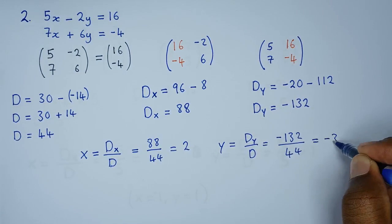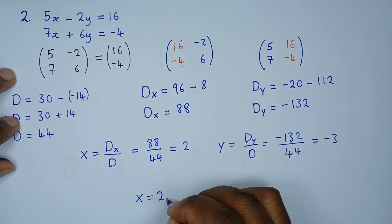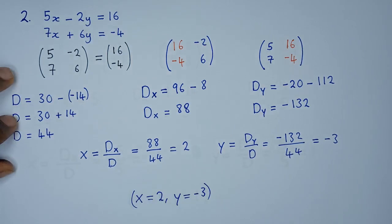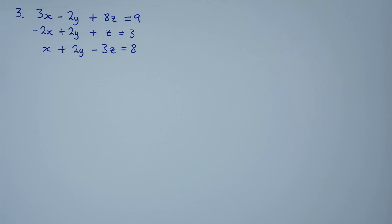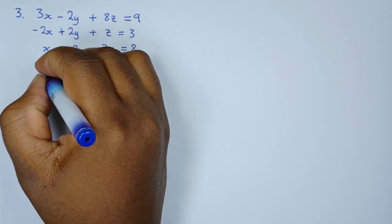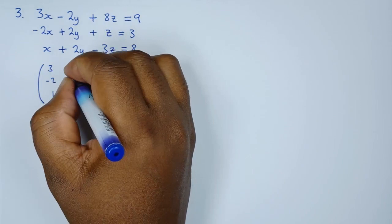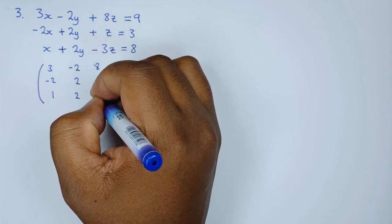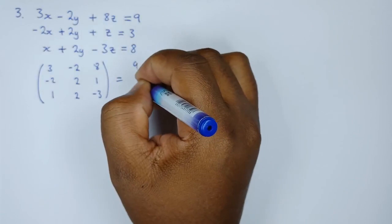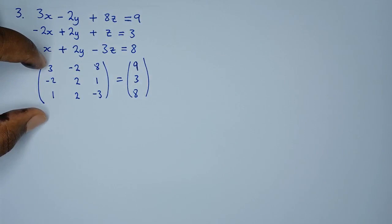The solution set for example two is x = 2 and y = −3. Now let's look at how to apply Cramer's rule to a 3x3 system. Finding 3x3 determinants is a bit lengthy but manageable. The 3x3 coefficient matrix is formed with rows [3, −2, 1], [−2, 2, 2], [8, 1, −3], and the right-hand side values are 9, 3, and 8.